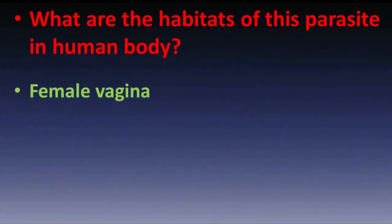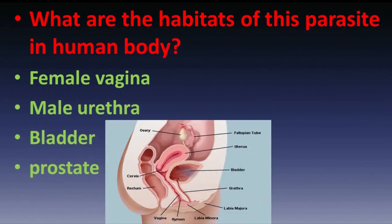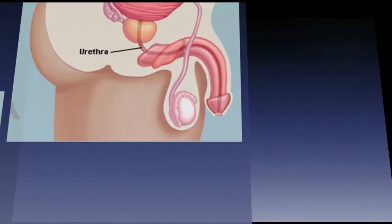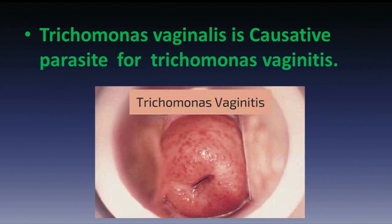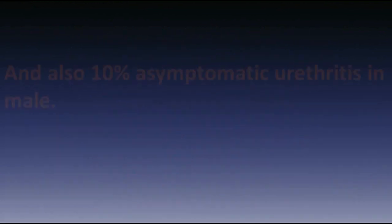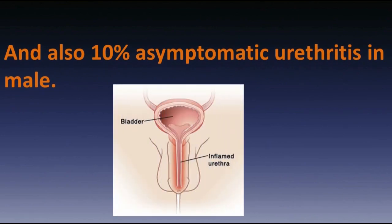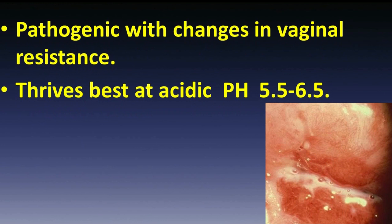The habitats of this parasite in the human body are: in females, the vagina; in males, the urethra, bladder, and prostate. Trichomonas vaginalis is the causative parasite for trichomonas vaginitis and also causes 10% of urethritis cases in males, which are often asymptomatic.